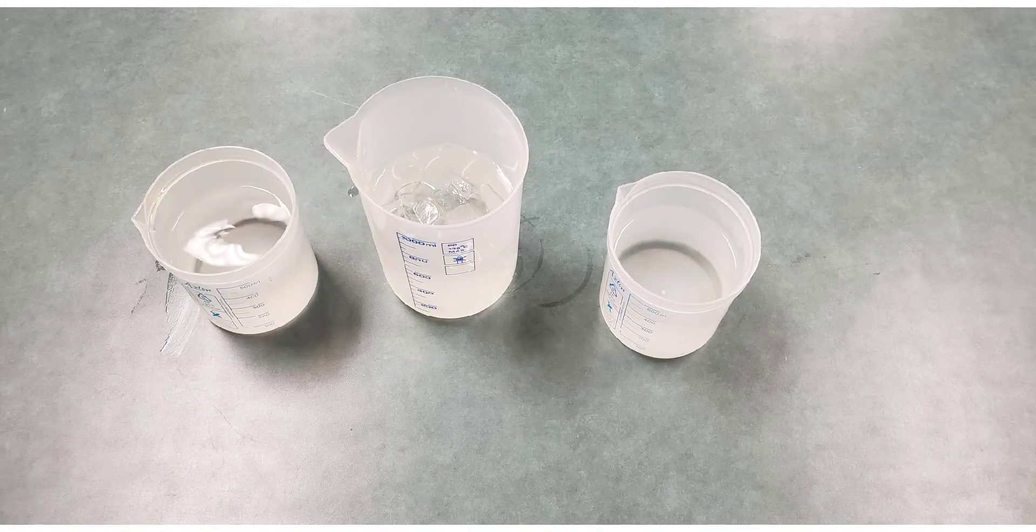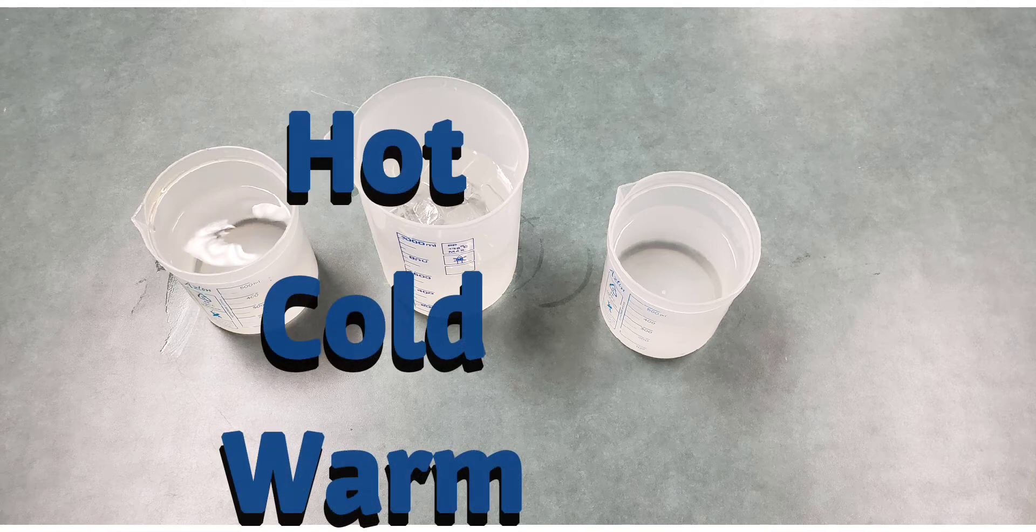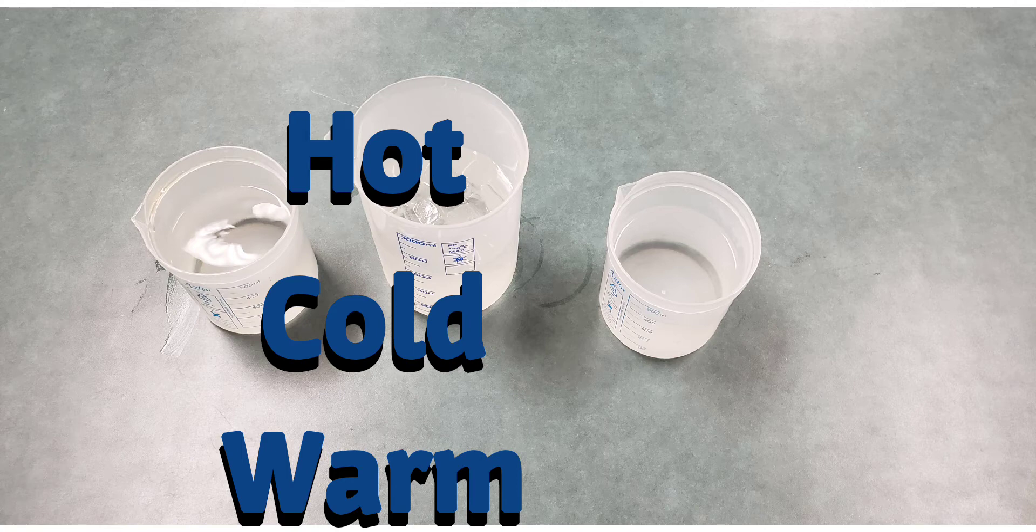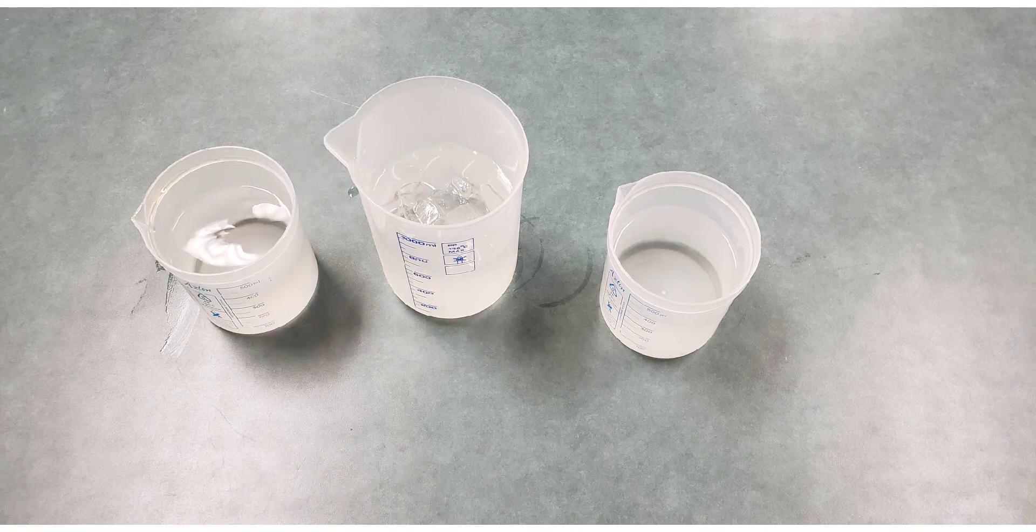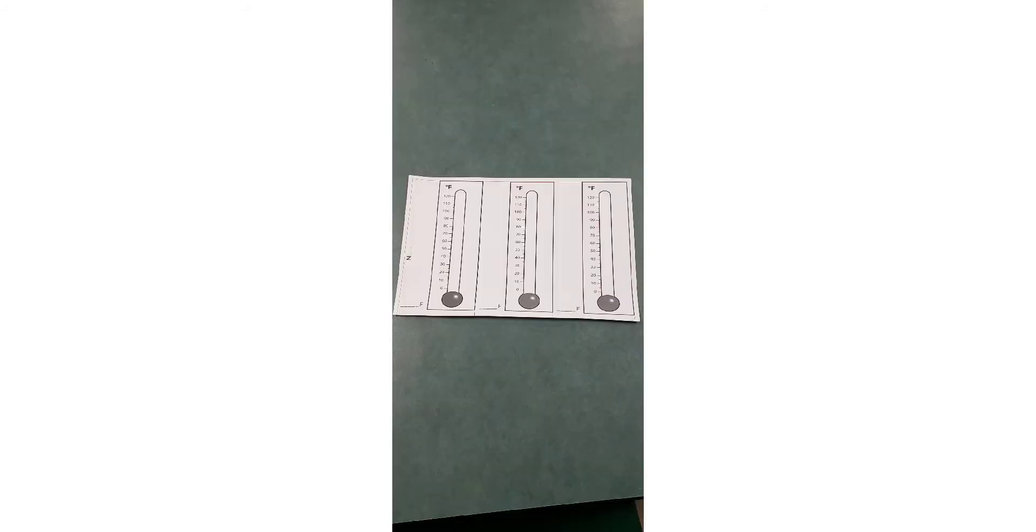In order to do this experiment, you're going to need three cups of water. You'll need hot, cold, and warm, or you can just use room temperature water. You're also going to need a thermometer that has the mercury inside of it, and I also like to use goggles with the kids just to show them that you need to be safe whenever you're doing any type of experiment. And then you're also going to need a recording sheet that has thermometers on it.